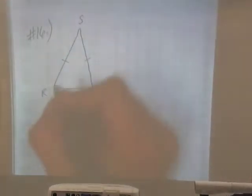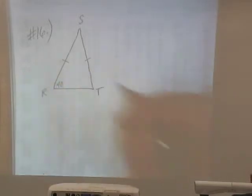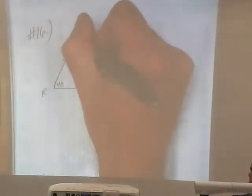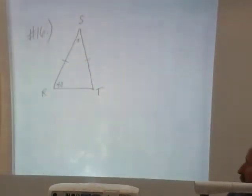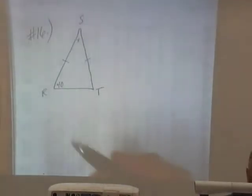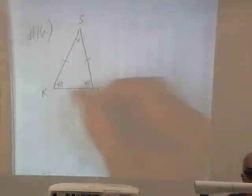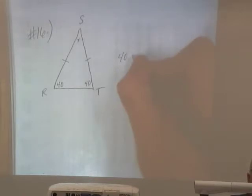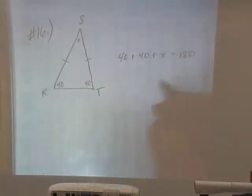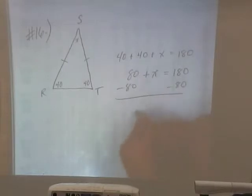Alright, if the measure of angle R is 40, we want to know what's the measure of angle S. So that's our X we're looking for. If angle R is 40, what's the measure of angle T? 40. It's also 40 because those are base angles. Base angles of an isosceles triangle are also congruent. And we know if we add the three angles up of a triangle, what do we get? 180. So 80 plus X has to equal 180. Minus the 80. So angle S is equal to 100 degrees.